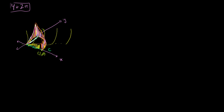In the last video, we set out to figure out the surface area of the walls of this weird-looking building, where the ceiling of the walls was defined by the function f(x,y) = x + y squared. The base contour of its walls was defined by a circle of radius 2, then going down along the y-axis, then along the x-axis. In the last video, we figured out the first wall's surface area.